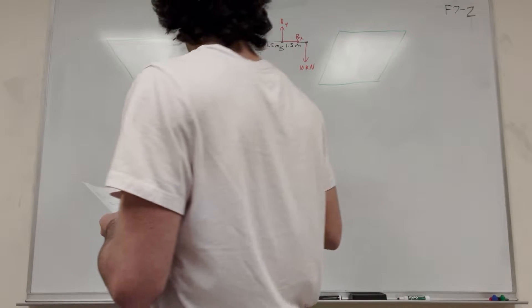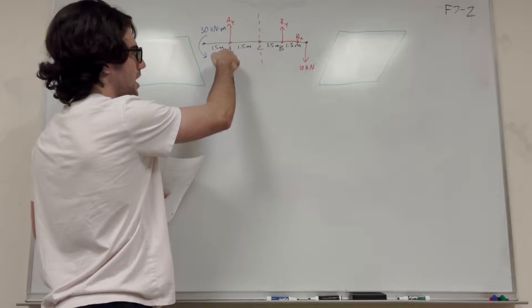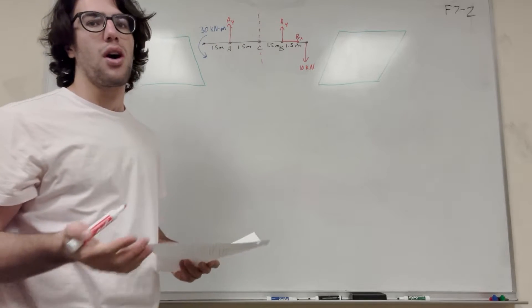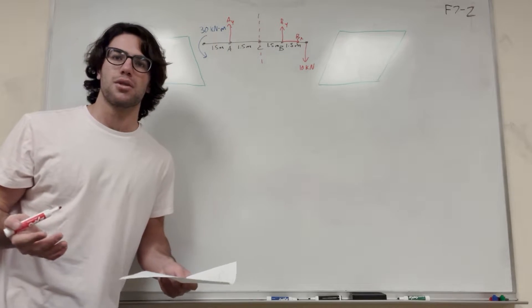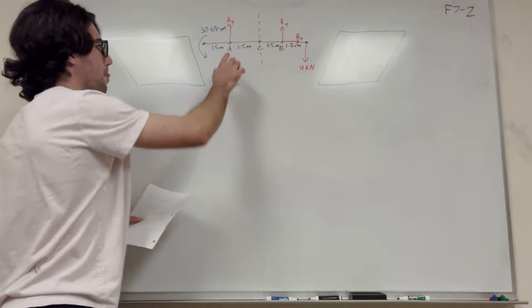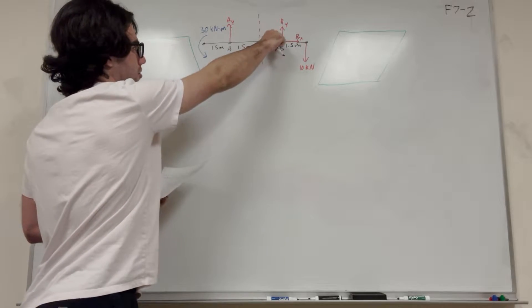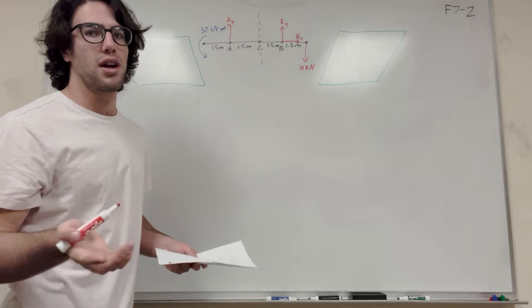So let's go ahead. If we're taking the cut at C and we're doing everything to the left, we're going to want to find A_Y, because we want to know all the forces that we can. Otherwise, we're going to be left with more unknowns than equations. So let's go ahead and find A_Y. If we want to find A_Y, it's going to be best if we take a moment around B, because it's going to get rid of B_Y, and that way we're going to have only one unknown.